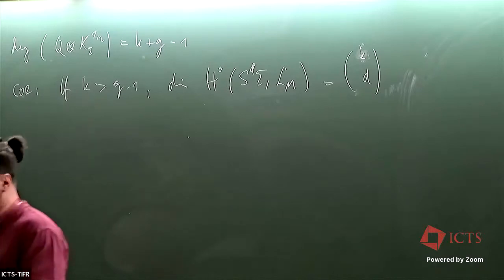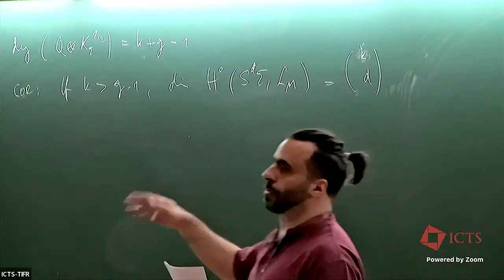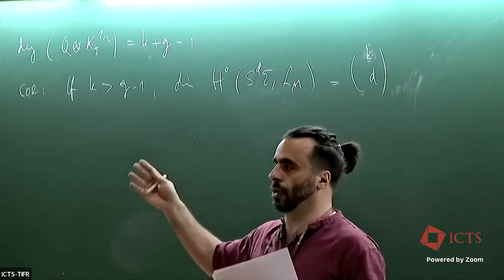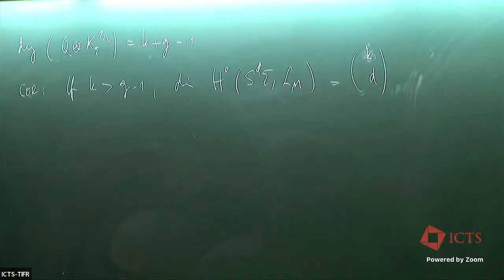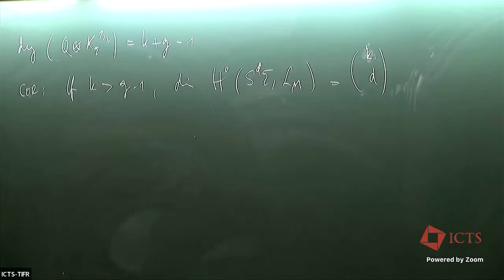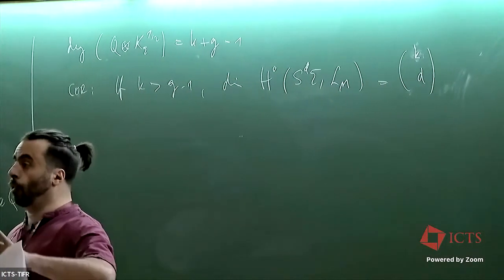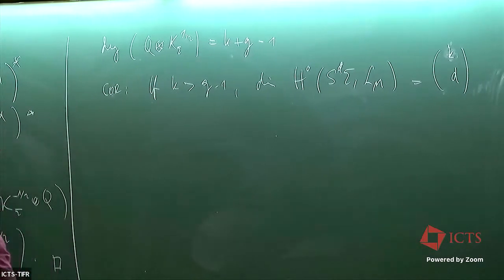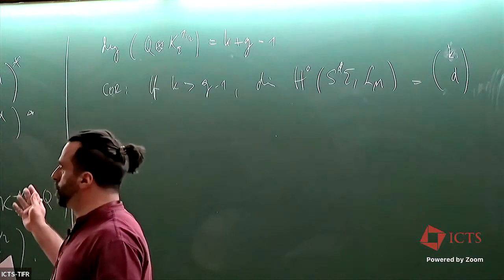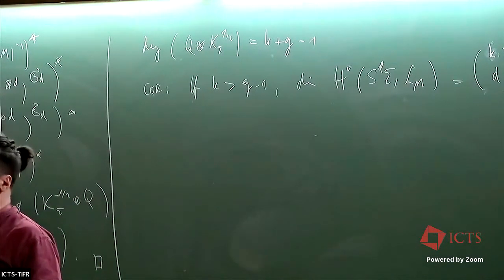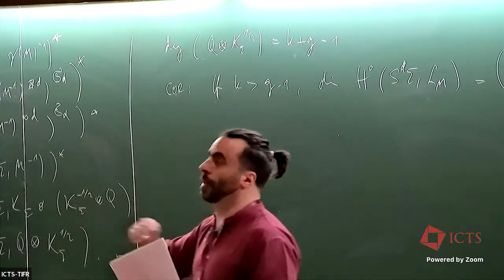Now there is the question of dependence on choices. Can you find a Hitchin connection relating these different choices? The answer is no: you can parametrize the choices in an algebraic-geometric way, but there are obstructions to having a projective flat connection. So the different quantizations are not related by a Hitchin connection, except in certain trivial cases such as line bundles where a projective flat connection always exists.